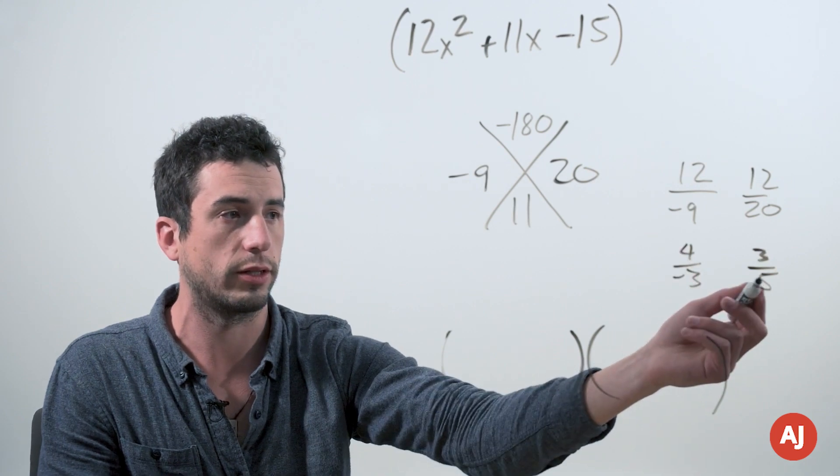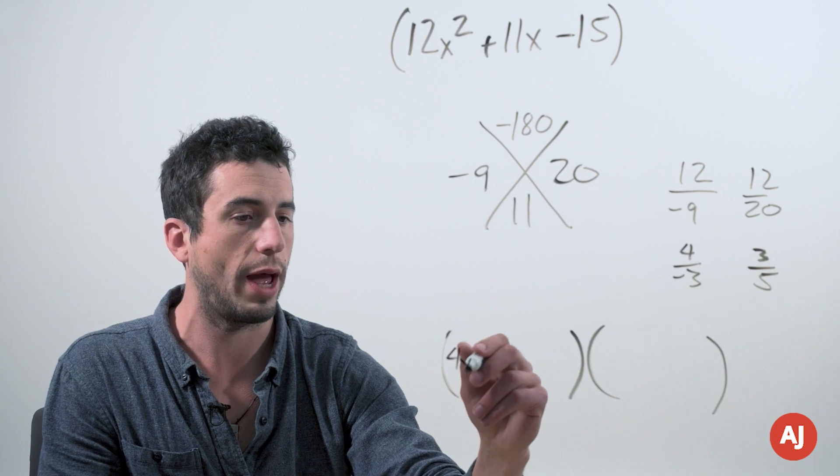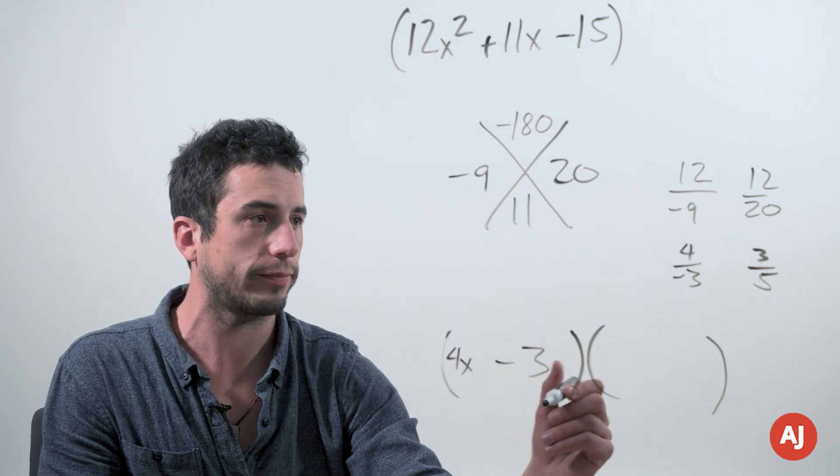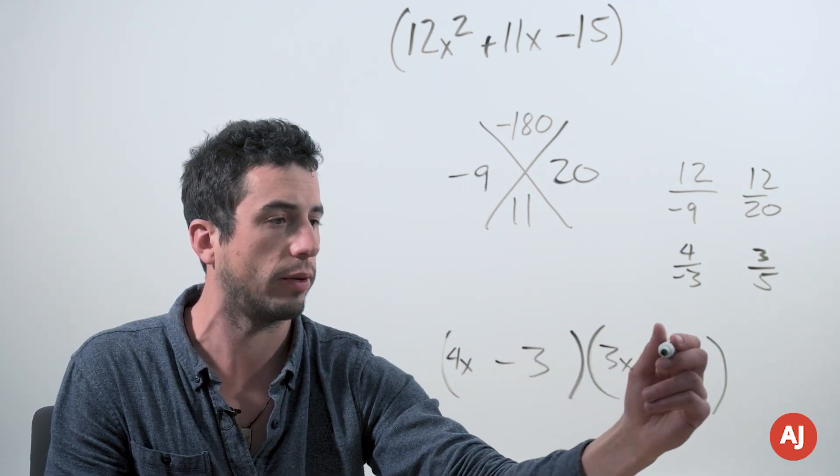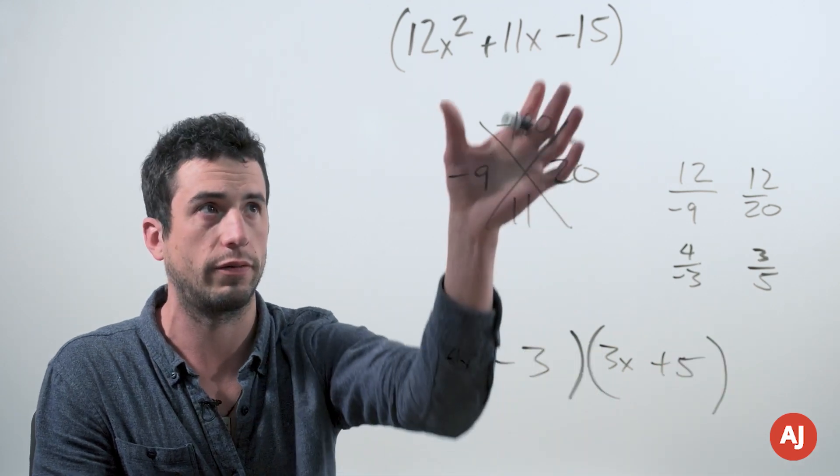Now those numbers, as we'll see in just a second, are in fact the coefficients. If we do 4x minus 3 and 3x plus 5, those are in fact the factors of the original problem.